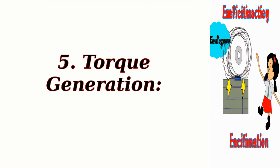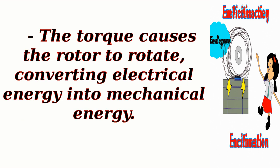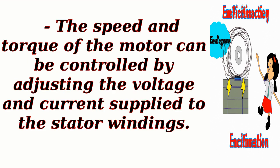Torque generation: The interaction between the magnetic fields of the stator and rotor creates a force that generates torque. The torque causes the rotor to rotate, converting electrical energy into mechanical energy. The speed and torque of the motor can be controlled by adjusting the voltage and current supplied to the stator windings.